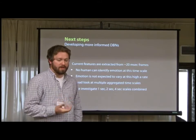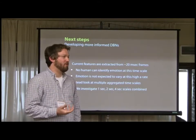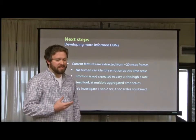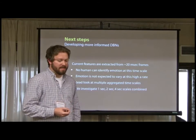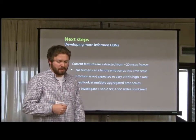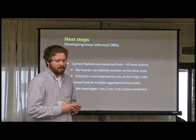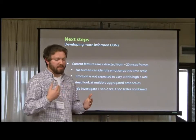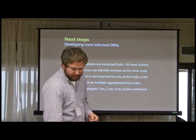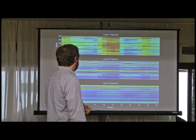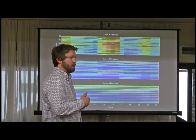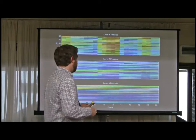Current features are really all extracted from these 20-millisecond frames, but no human could identify emotion at that time scale — a 20-millisecond clip would just sound like a click. Emotion is not expected to vary at this high a rate. Instead, we look into multiple timescales, because we also believe emotion is influenced by what you've already listened to. We look at the same model but using aggregations of the past one second, past two seconds, and past four seconds, then concatenating those together as inputs. Now we're hopping at one second rather than 20 milliseconds.